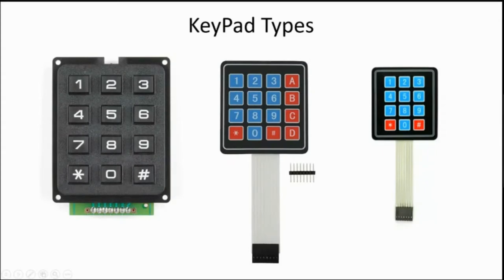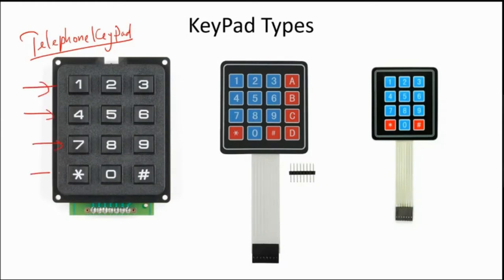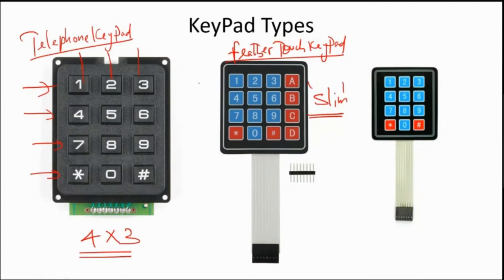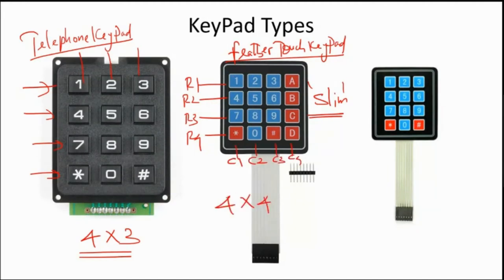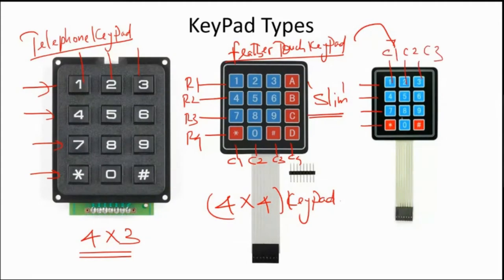There are various keypad types. The one on the left is called a telephone keypad, with four rows and three columns — a four-by-three keypad. The middle one is a feather touch keypad with four rows and four columns — a four-by-four keypad. The one on the right is again a feather touch keypad but with four rows and only three columns, giving twelve keys total — a four-by-three keypad.